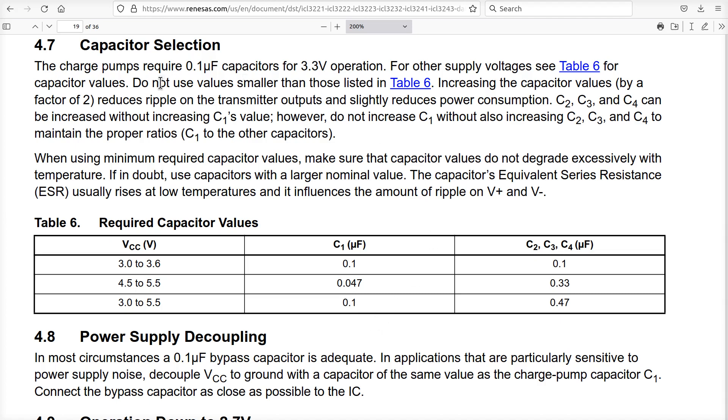If we look in here, do not use values smaller than those listed. And that's what I did, right? I used 0.1, even though I should have used something down here. Increasing the values by a factor of two reduces the ripple of the transmitter outputs and slightly reduces power consumption. C2, C3, and C4 can be increased without increasing C1 value. However, do not increase C1 without also increasing two, three, and four to maintain the proper ratios between these capacitors.